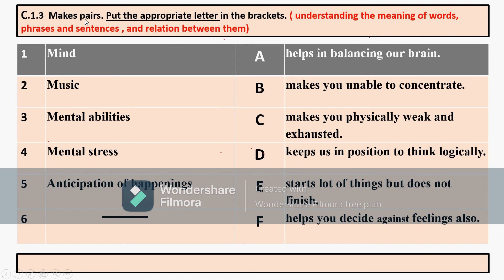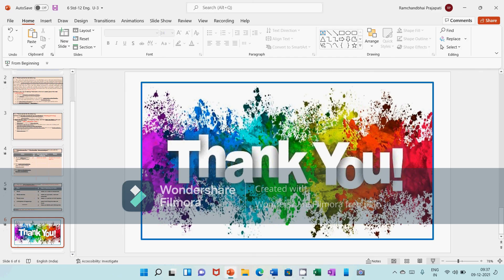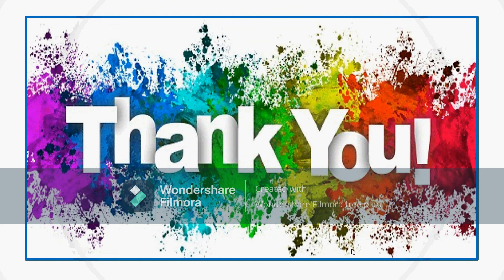Now let's go on. Here you have to make pairs. There are words like mind, music, mental ability, mental stress, and anticipation of happenings. Write them in the V section where there are relevant reactions on this side, and check your answers. Friends, you can just do this on your own. Thank you.